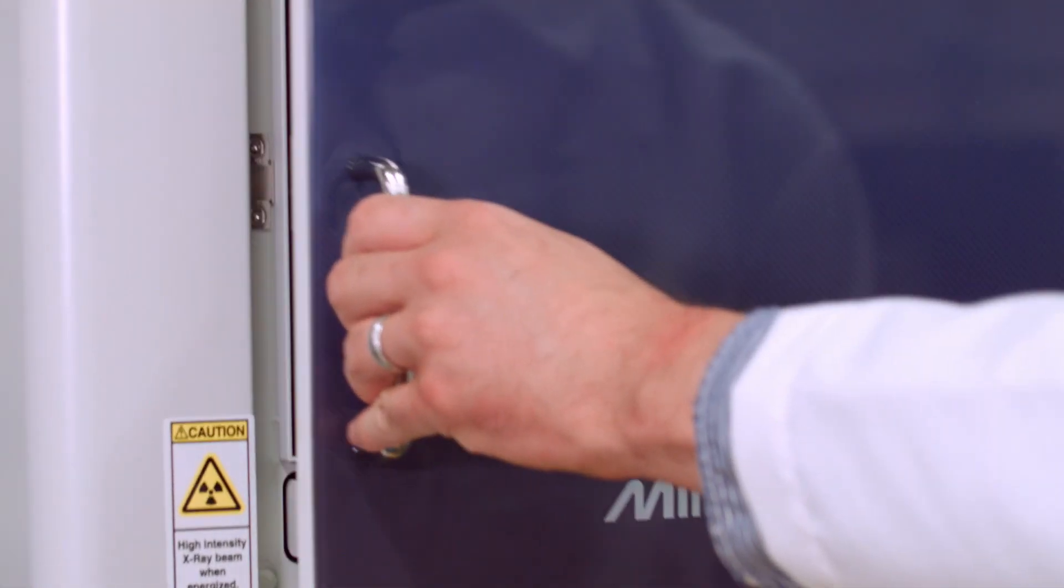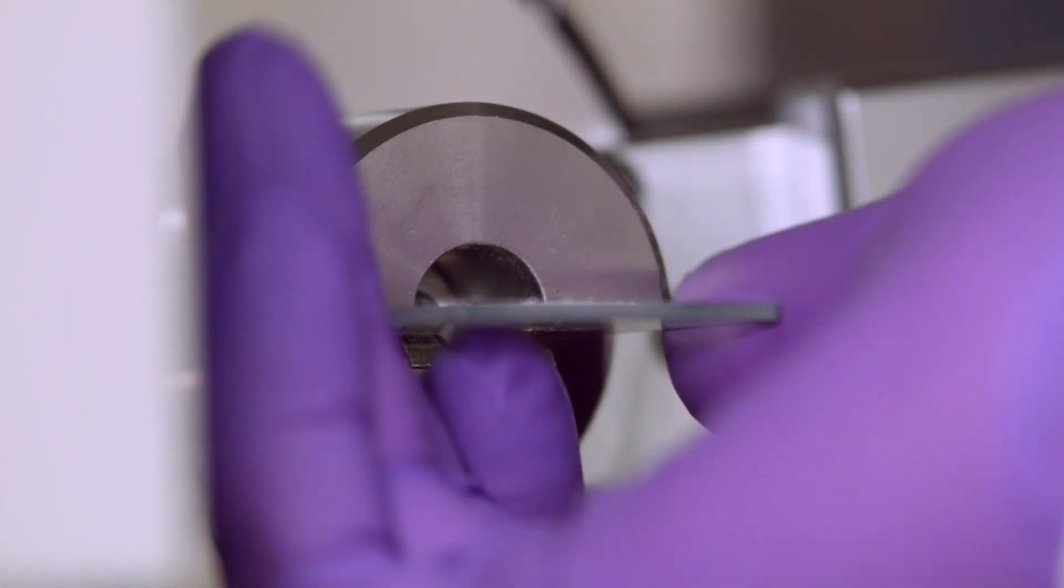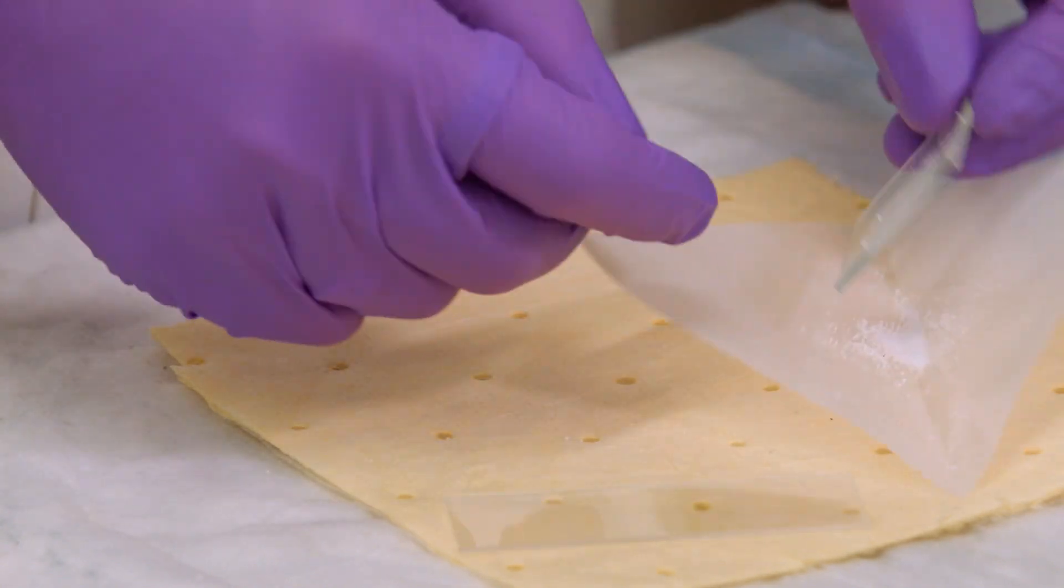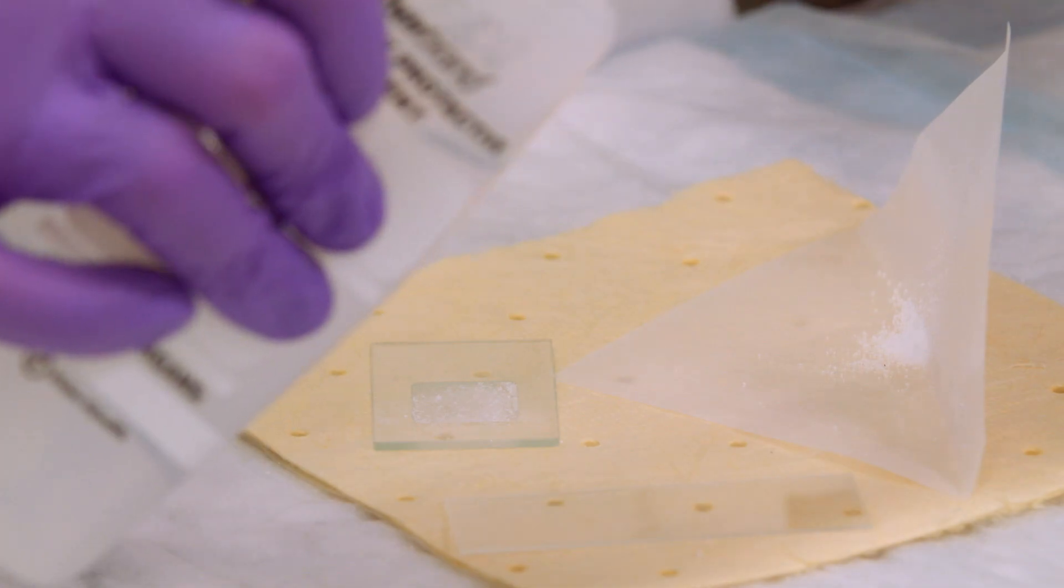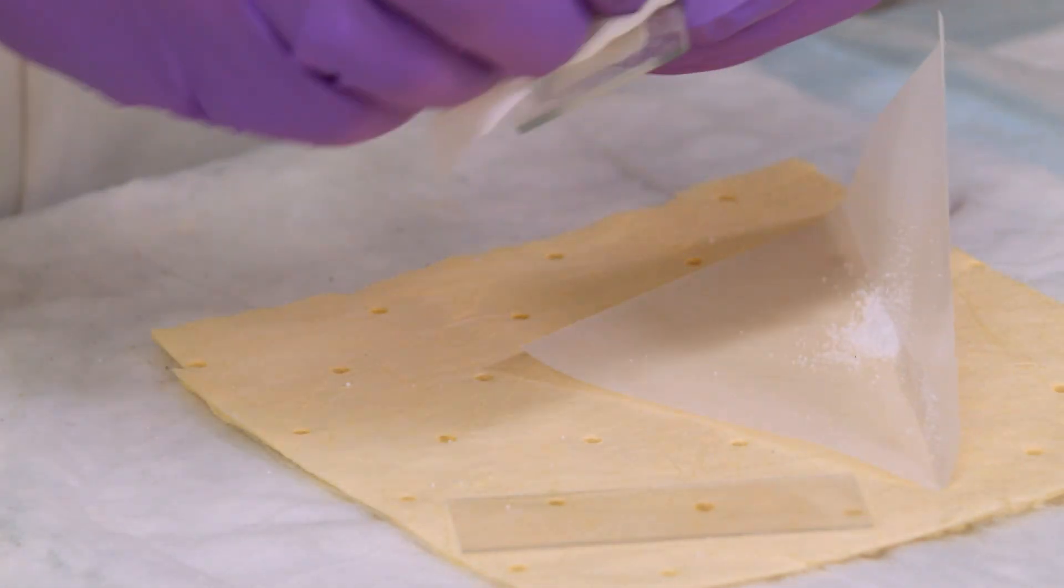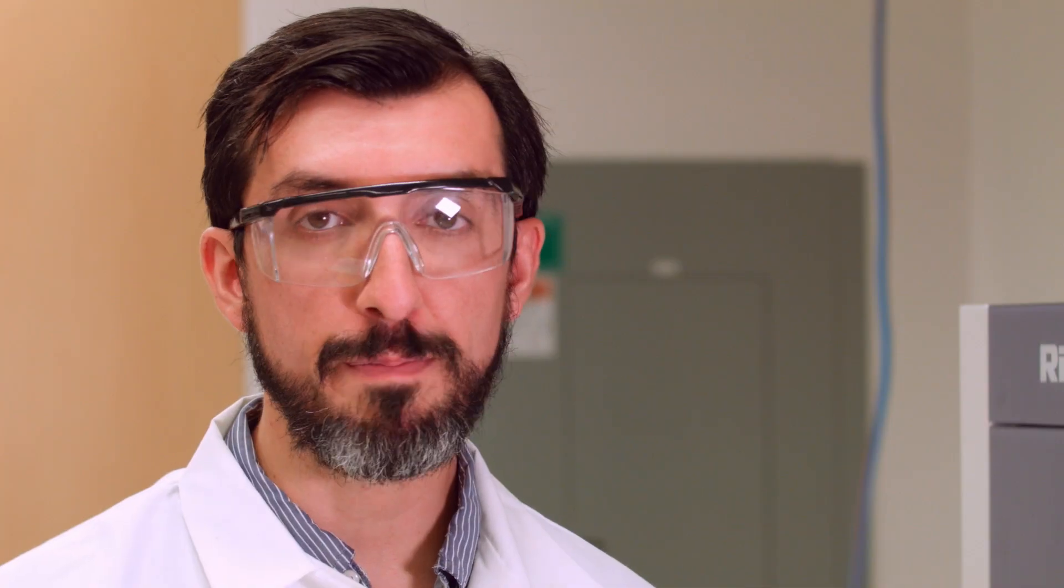After your scan is complete, you'll need to remove your sample. While the x-ray light may still be on, it is safe to open the doors. If you used our sample holder, make sure to recover your sample and clean the sample holder. This can be done with chem wipes and water or isopropanol. Make sure to remove all samples from the x-ray lab once you've completed your experiment.